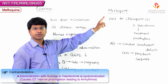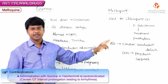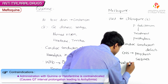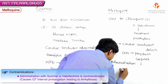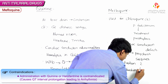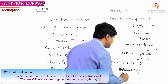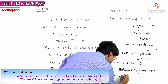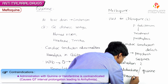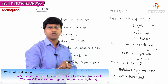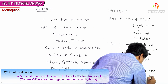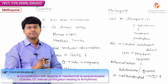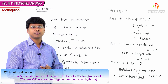The reason is that when you give mefloquine either with halofantrine or quinine, it can cause prolongation of the QT interval and that will precipitate arrhythmias. So the combination of mefloquine with halofantrine or quinine is contraindicated because it causes QT prolongation.